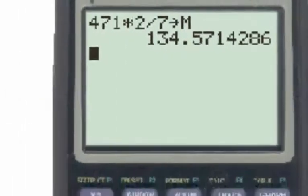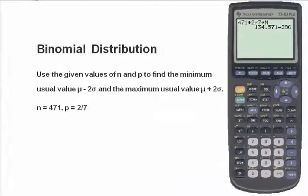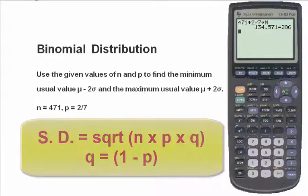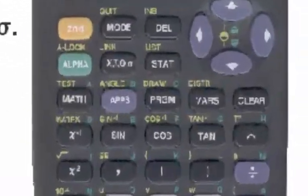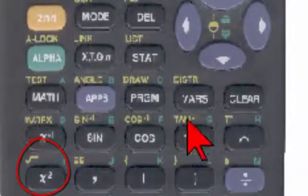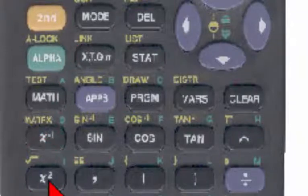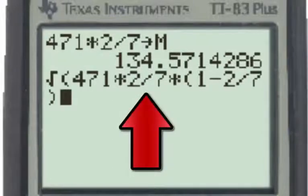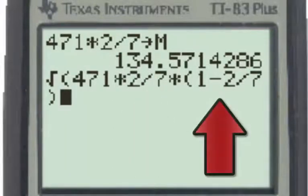In a similar way, I'm going to calculate the standard deviation using the formula, the square root of n times p times q. The square root is over the x squared key in yellow, so I'll hit the yellow second key and the square root. And now n, which was 471, times p, which is 2 sevenths, times q, which is 1 minus 2 sevenths.